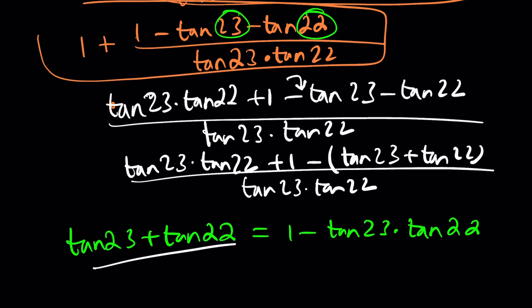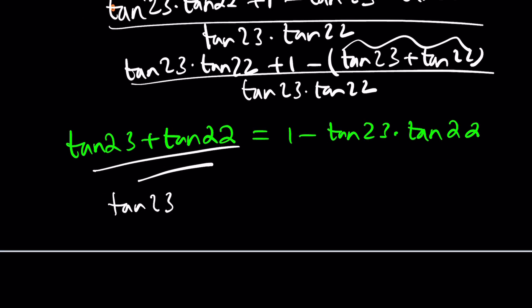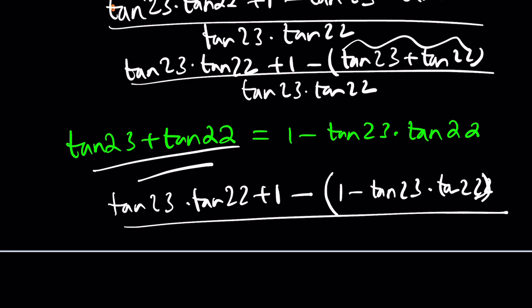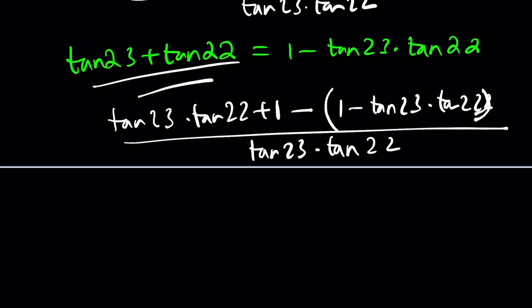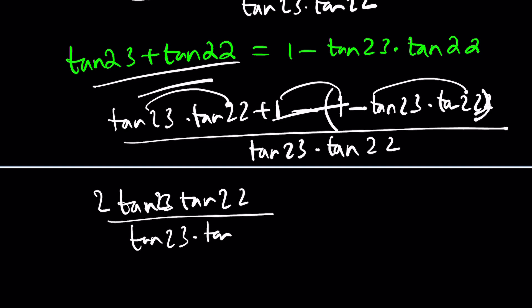And then, this can be replaced with 1 minus that. So, we have tangent 23 times tangent 22 plus 1 minus the sum, which can be replaced with 1 minus tangent 23 times tangent 22. This should do the trick. Now, when you expand this, it's going to give you tangent 23 times tangent 22 twice because of the double negation. So, you're going to get 2 times tangent 23 times tangent 22 plus 1 minus 1. They're going to cancel out. And then, you're going to divide this by tangent 23 times tangent 22. And here we go. Everything cancels out and you end up with a 2.